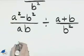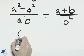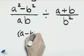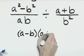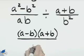We can factor a squared minus b squared as the difference of squares, a minus b and a plus b. That will be over ab.